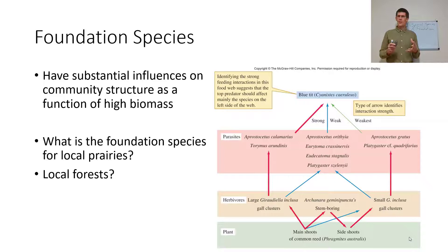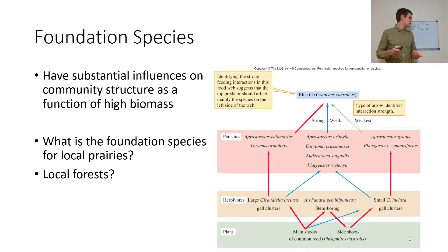It's not hard to think about what the local forest foundation species would be — just think of what has the most biomass in the local forest. Good old Douglas fir. Think kelp forest: the foundation species for a kelp forest is kelp, because just through their biomass they're going to have substantial impacts on the whole community structure. Foundation species are almost always going to be plants — huge biomass, huge impact.